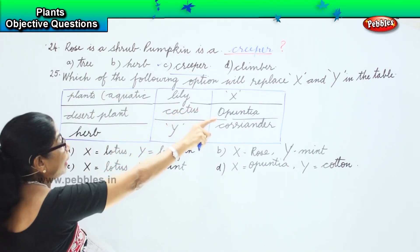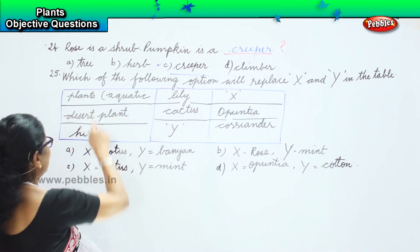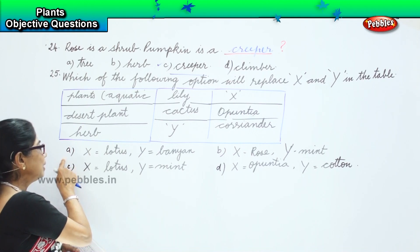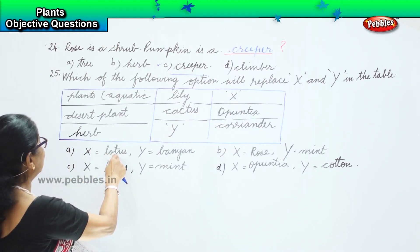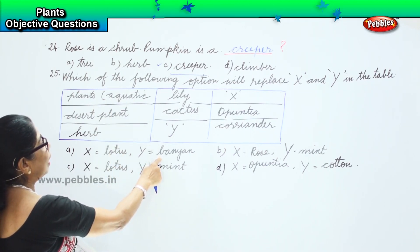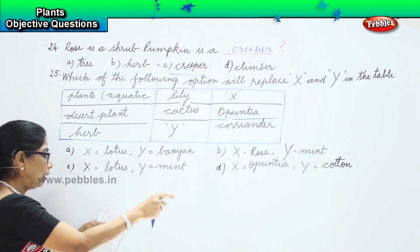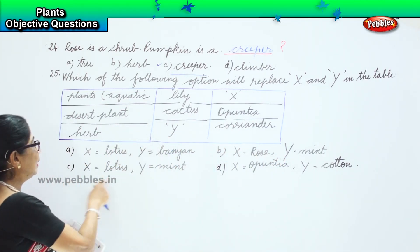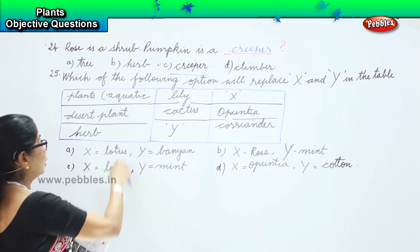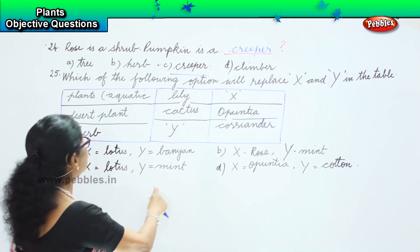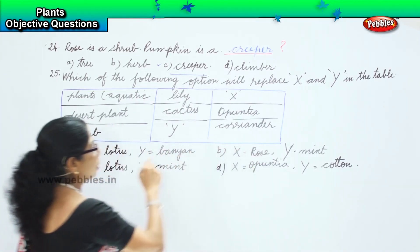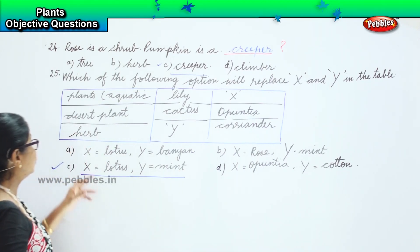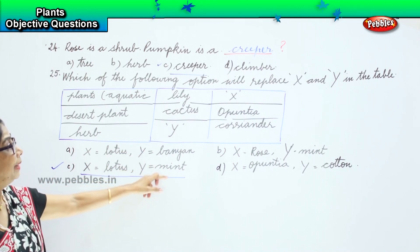We have to choose the answer. The table has plants: aquatic — lily, desert plant — cactus, herb — coriander. Option A: X is lotus, that's a water lily, and Y is banyan — it's a herb? No. Option B: rose for aquatic? No. Mint is a herb — yes. Option C: X is lotus, that's a water lily, so it's aquatic — fine. Y is mint, that's a herb. So when you say X is lotus for aquatic and Y is mint for herb, that's the correct answer.